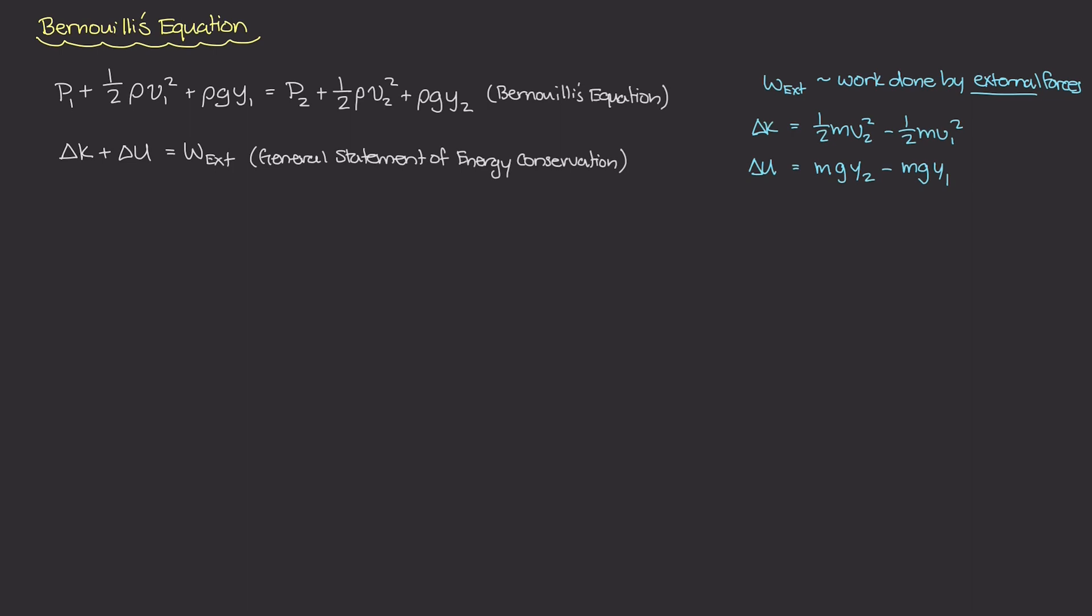Now, if there was no external work being applied to the system, in other words, w external was equal to 0, then the energy in this system will remain the same. This abides by the statement of energy conservation, and that is energy in a system is constant. It cannot be created nor destroyed, only transformed from one form to another.